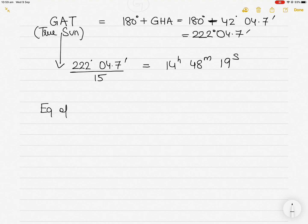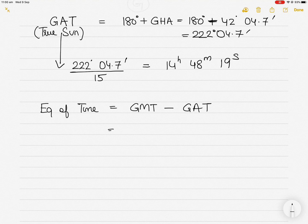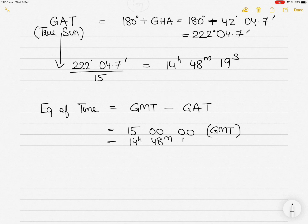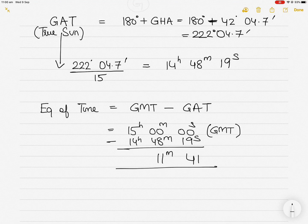The equation of time equals GMT minus GAT. The GMT is given in the question as 1500 hours, and the GAT is 14 hours 48 minutes and 19 seconds. The difference between these two is 11 minutes and 41 seconds.